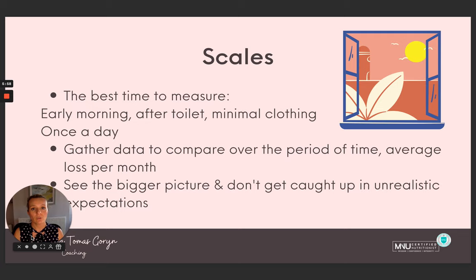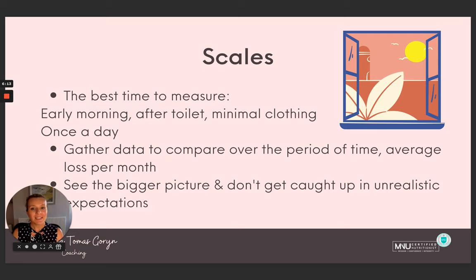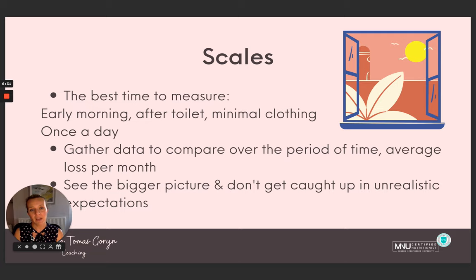A full bladder is going to show a different reading on scales. This is why you really have to see it from a totally different perspective. What's also important is gathering data to compare over a period of time — the average loss per month. I want you to see the bigger picture. It took me 12 months to lose 12 kilos — that's two pounds per month or one kilo per month. But I focused on my habits and behavior change, on improving my relationship with food.